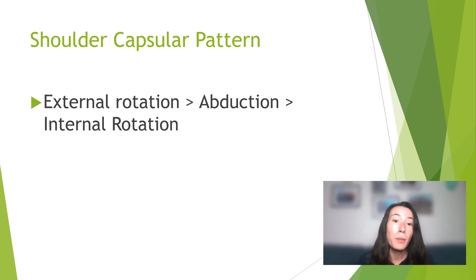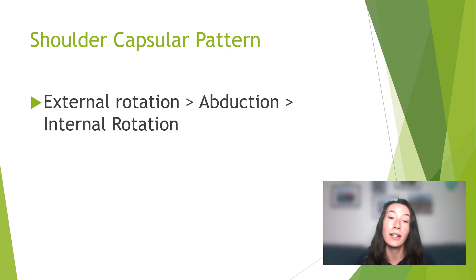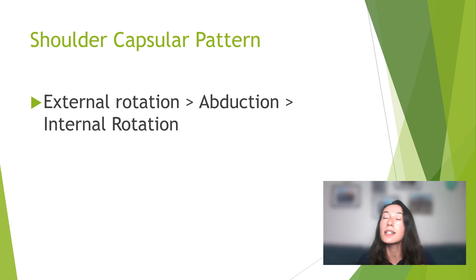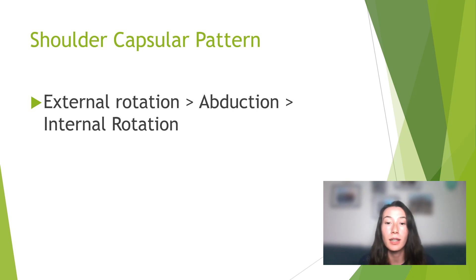The ratio and the proportion of how much each of these planes and their range of motion respectively is going to be affected is what the capsular pattern is all about. So if you're evaluating your patient and you find that their external rotation is completely fine while their internal rotation is the most limited, this is not a capsular pattern. In the capsular pattern, as you can see on this slide, it has to be external rotation being the most limited. This is the capsular pattern of the shoulder.